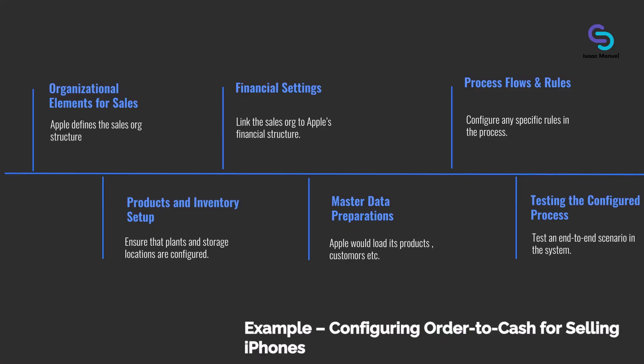For instance, since Apple chose the Sales US scope, CBC will list activities relevant to US sales, including US-specific tax settings. If Apple later rolled out in Canada, CBC would present additional activities for Canadian taxes, bilingual forms, and so on.